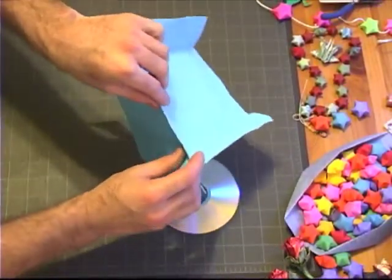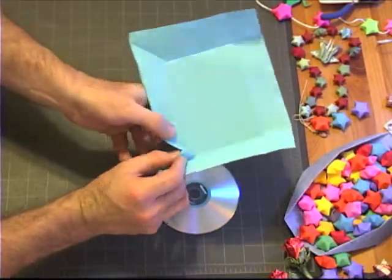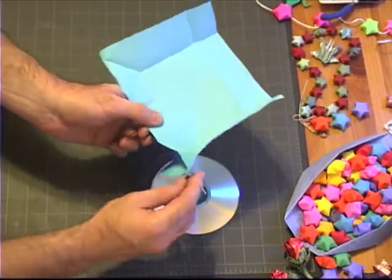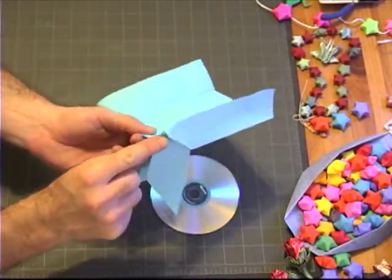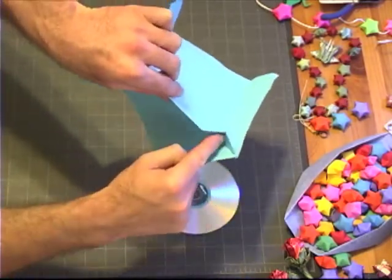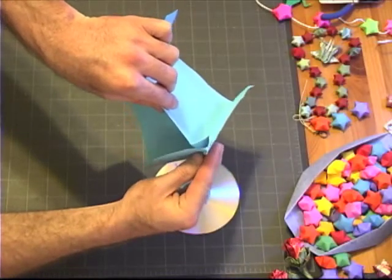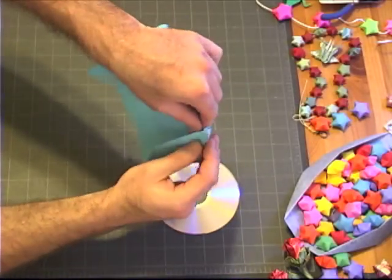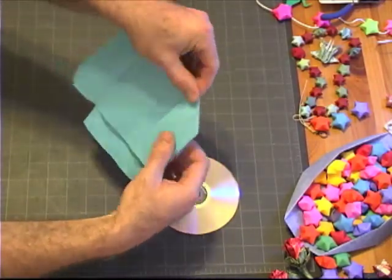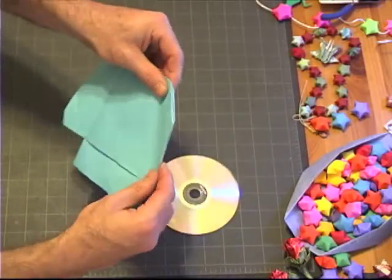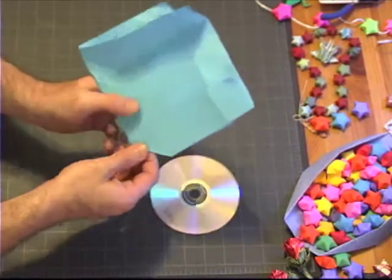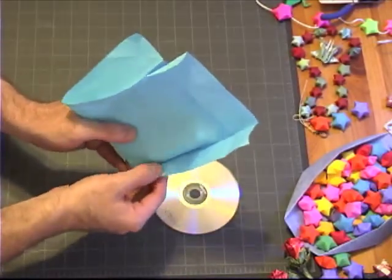We're going to push this up towards where we have this crease, keeping this point folded. You see how, as I push this up, that collapses in, and this point here slides up against the bottom like that. Then we have a nice closed sink, and that's going to keep this closed.